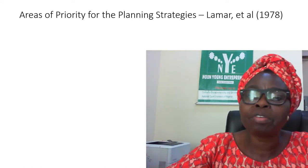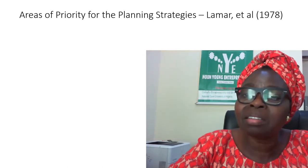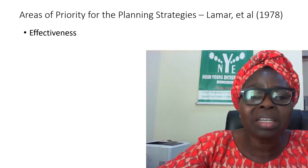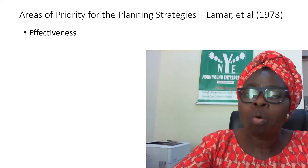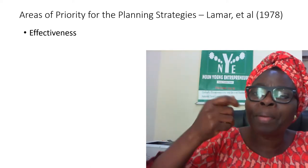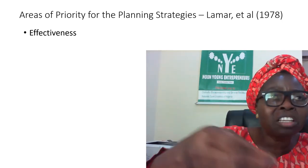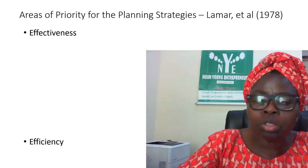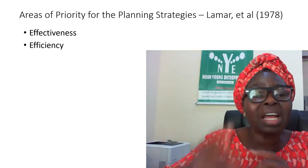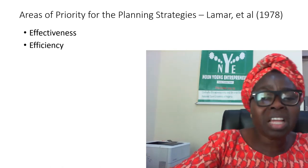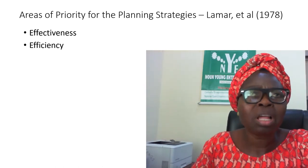Now let us look at the area of priority for planning strategies. Here we look at the work of Laman (1978). He said you must look at effectiveness — how effective will each stage be in what you want to incorporate? Then there is efficiency: you are looking at whether the monetary input is equal to or commensurate with the output.